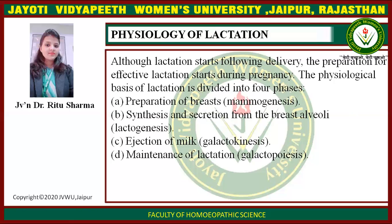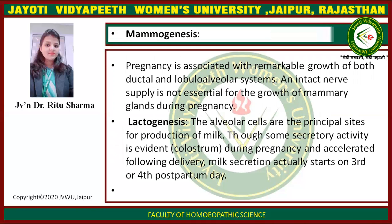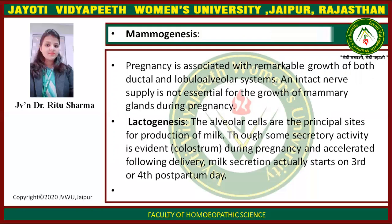Mammogenesis, Lactogenesis, Galactokinesis, and Galactopoiesis — these are the four stages of the physiological basis of lactation. Regarding Mammogenesis: pregnancy is associated with remarkable growth of both ductal and lobular alveolar systems, both active and inactive. Nerve supply is not essential for the growth of mammary glands during pregnancy.